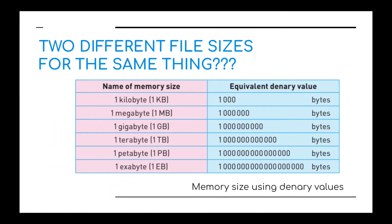We can look at file sizes in two different ways. The first method uses denary values. A kilobyte equals a thousand bytes, then multiply by a thousand to get one megabyte, again by a thousand for a gigabyte, and we go up in thousands every time — gigabyte, terabyte, petabyte, exabyte — adding three zeros each time.